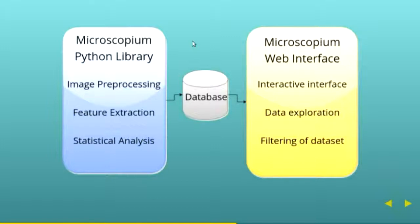This is a diagram of how Microscopium works. It comprises three different components. The first of those is the Python library. This comprises all of our methods that handle the image processing, feature extraction, and statistical analysis required to get what we want out of the images. Then the images are stored into a database. And then from the database, our web interface allows for interactive exploration of the data set and allows for filtering to look for particular properties of interest in your data set.